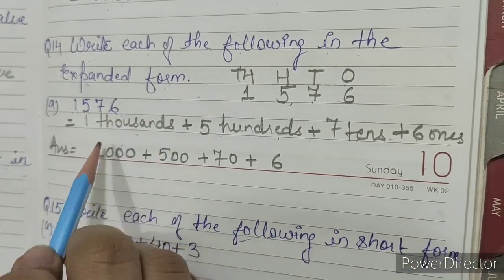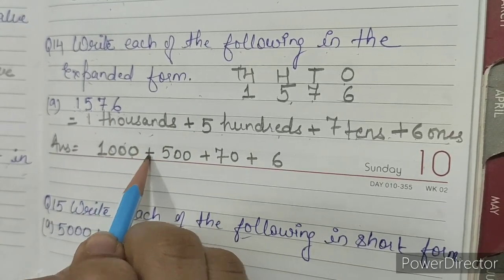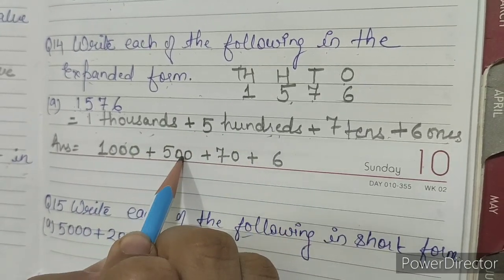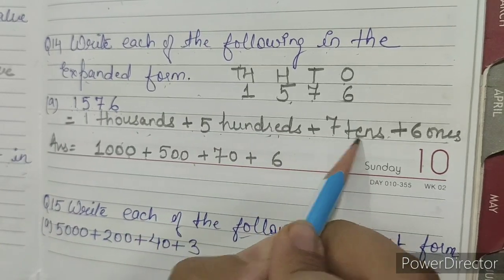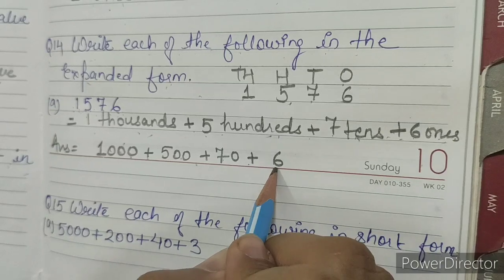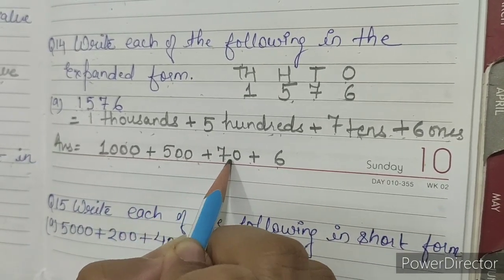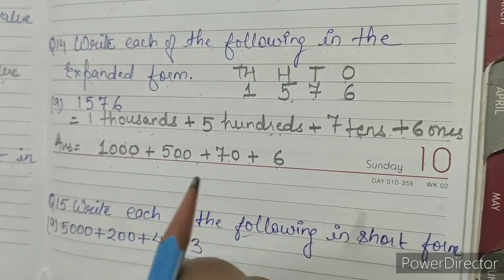Now I will show you the expanded form. One triple zero is one thousand, plus five double zero is five hundred, plus seven zero is seventy, plus six ones means six. So this is our answer: 1000 + 500 + 70 + 6.